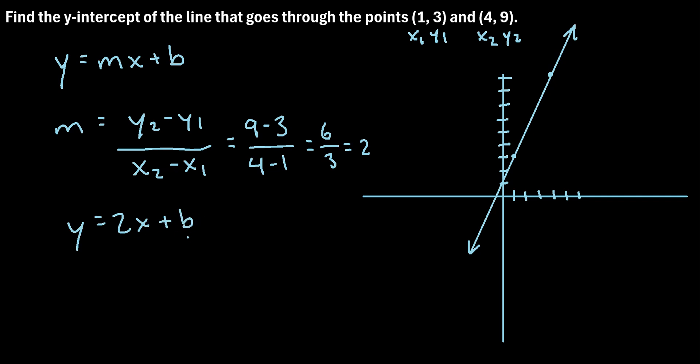Now to solve for b, to figure out what b is, we just need to plug in the x and y values of either one of these points. It doesn't matter which one we choose. So let's just pick this first coordinate pair right here, (1, 3).